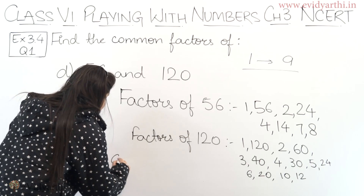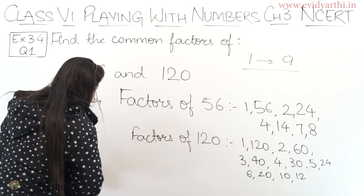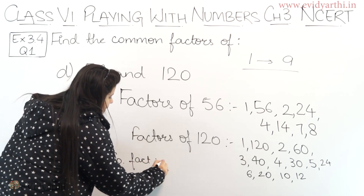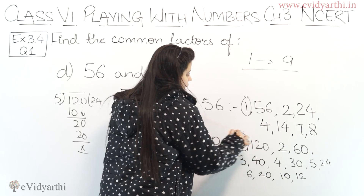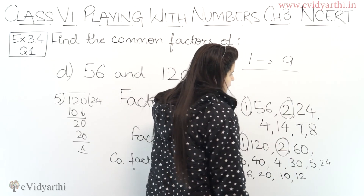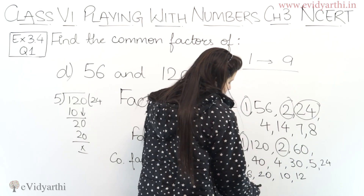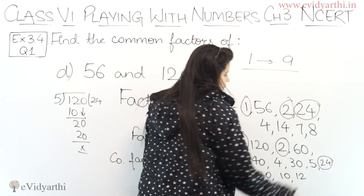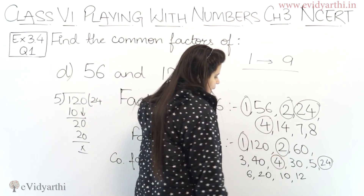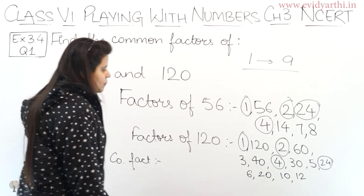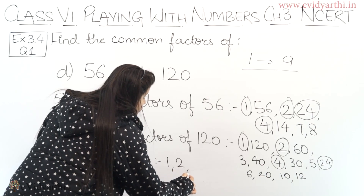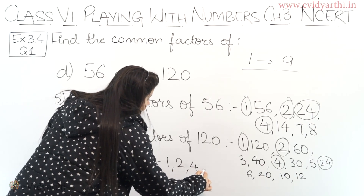Now we have to write the common factors of 56 and 120. Let's circle the common ones: 1 is common in both. 2 is common in both. 4 is common in both — it appears here and here. And 8 is common in both. After this, no other number is common. So the common factors are 1, 2, 4, and 8.